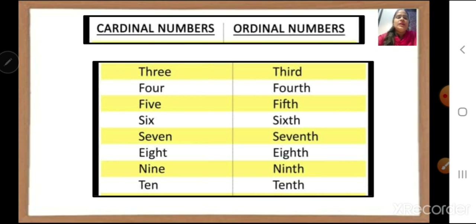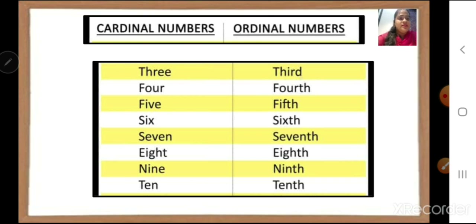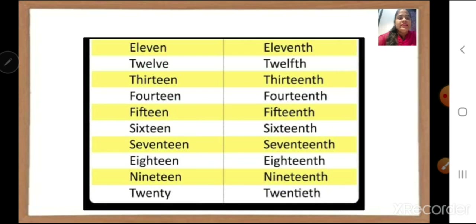Cardinal numbers are the normal numbers that we write: 1, 2, 3, 4, 5, 6, 7, 8, 9, 10 and so on. For ordinal numbers, 3 is 3rd, 4 is 4th because it is showing the position, 5 is 5th, then 6th, 7th, 8th, 9th, 10th.